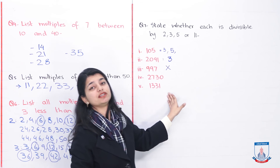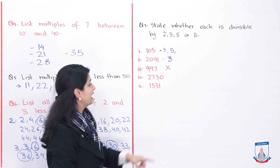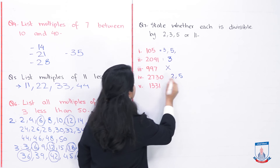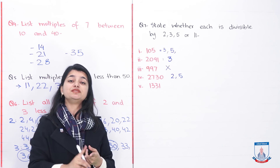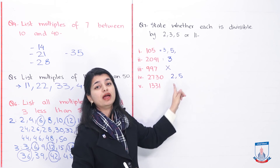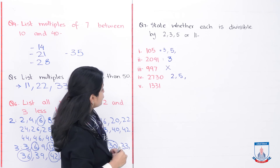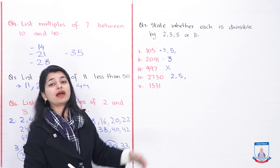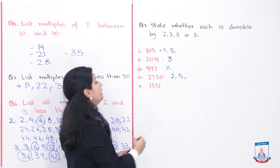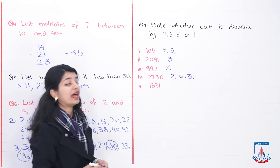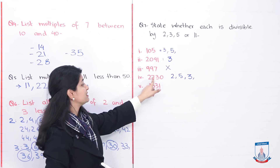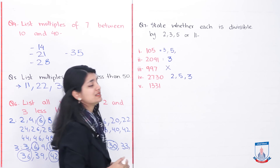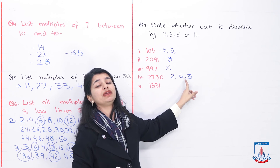Check 2730. It ends in 0, which confirms it is divisible by both 2 and 5. Check by 3: 2 plus 7 plus 3 plus 0 equals 12. Is 12 divisible by 3? Yes. So 2730 is divisible by 3 as well. Check by 11: 2 plus 3 is 5, and 7 plus 0 is 7; 5 minus 7 is negative 2. Since that is not 0 or 11, it is not divisible by 11. So 2730 is divisible by 2, 3, and 5.